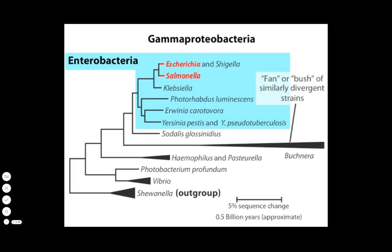For some branches, the fan or bush shape represents a large number of deeply divergent organisms. The Buchnera branch is much longer than the others because Buchnera bacteria live as endosymbionts within insect cells. Buchnera species have mutated much faster than free-living bacteria, losing many genes whose functions are provided by the insect host cell. Thus, our molecular clocks are inevitably distorted, especially for distantly diverged organisms with disparate mutation rates.